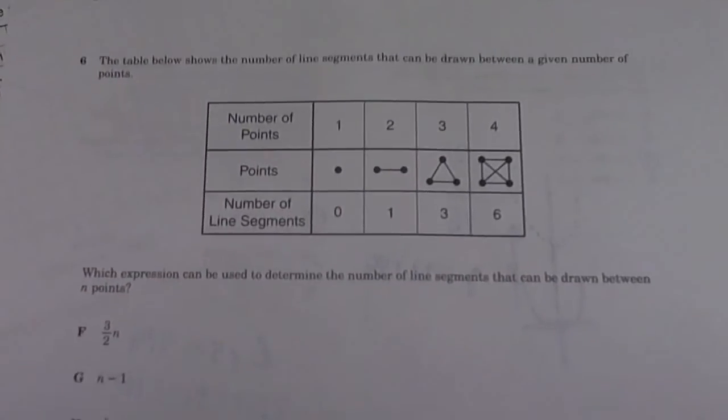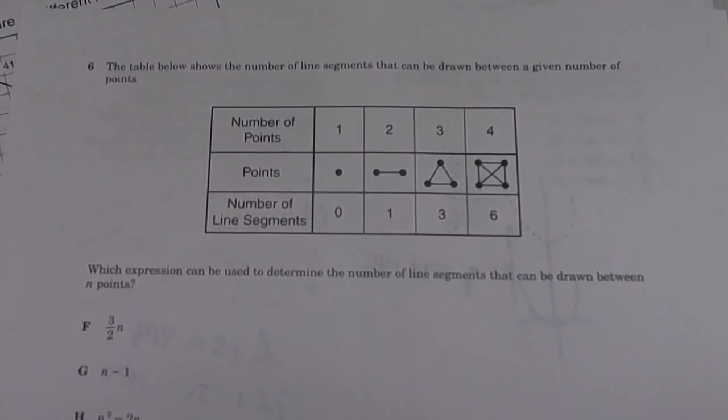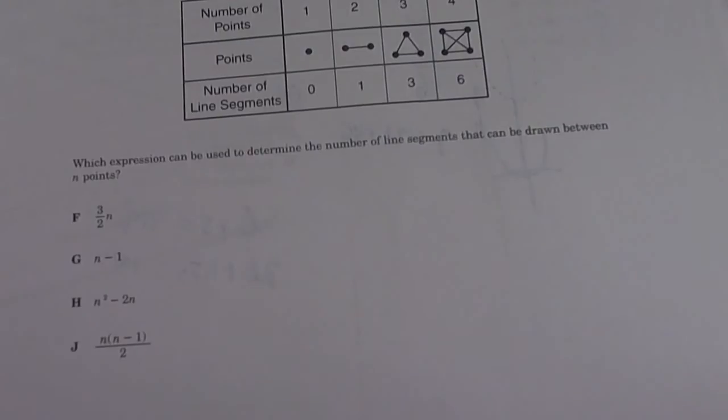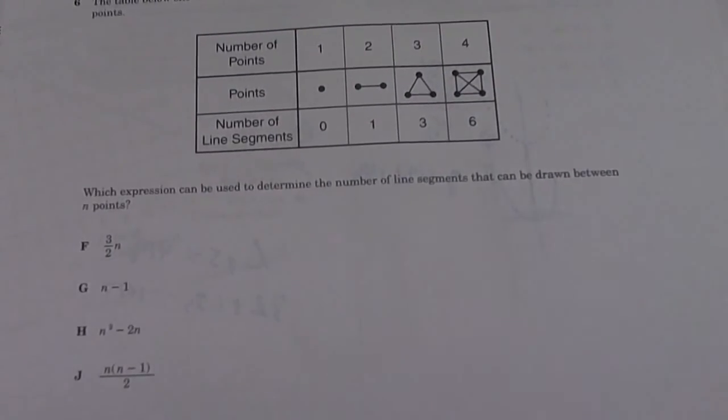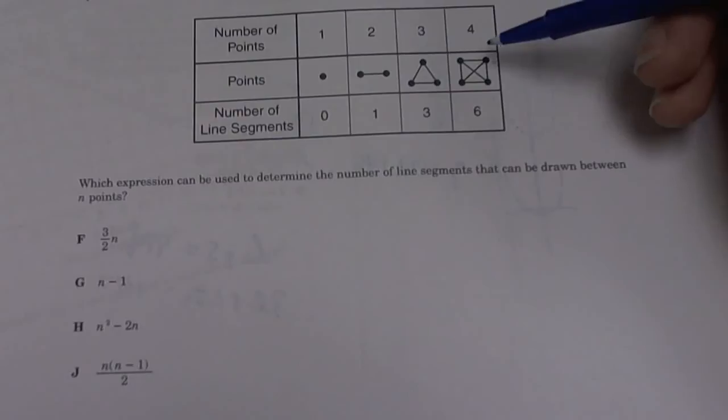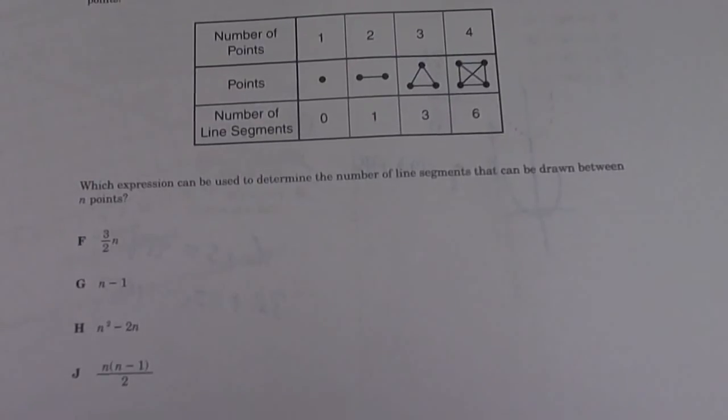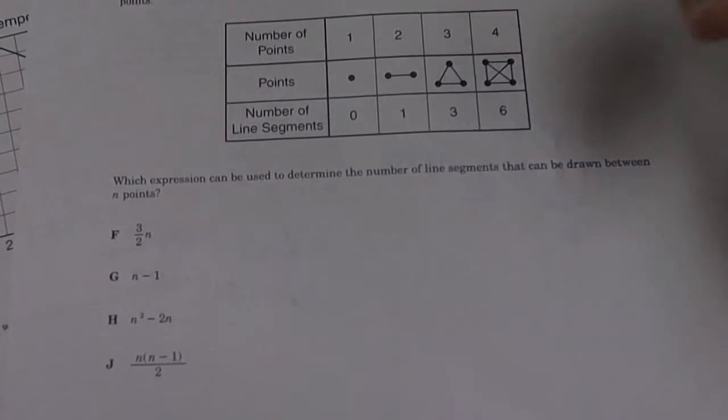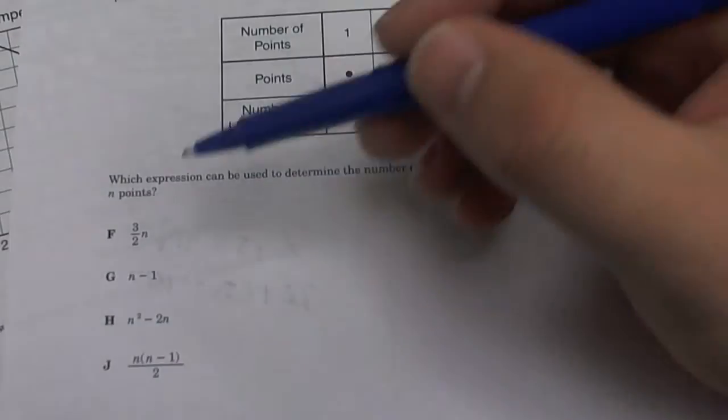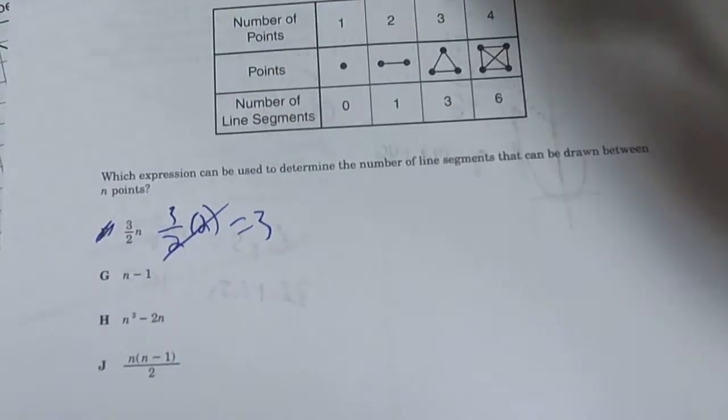Number 6. Which table below shows the number of line segments that can be drawn between a given point? Which expression can be used to determine the number of said line segments that can be drawn between n points? So pretty much we have to come up with a formula. So we're saying for 2 points it's 1, for 3 it's 3, for 4 it's 6. So the easiest way to do it is to plug in answers and see if we get the right thing. So if we plug in 2 to these equations we have to get 1. So plug in 2. 3 halves times 2 is 3. So that's wrong because 3 times 2, the 2's cancel, is equal to 3. And 2 is 1. So that's wrong.